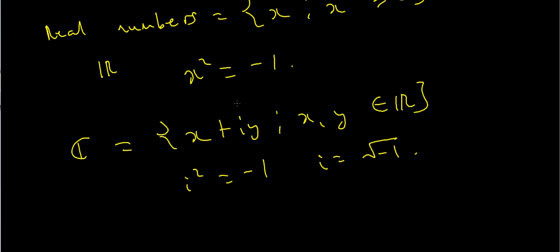And this i is something which we now accept to be a solution of this equation, x squared equals minus 1. That's by definition of i, and it's the fundamental building block to form the set of complex numbers.